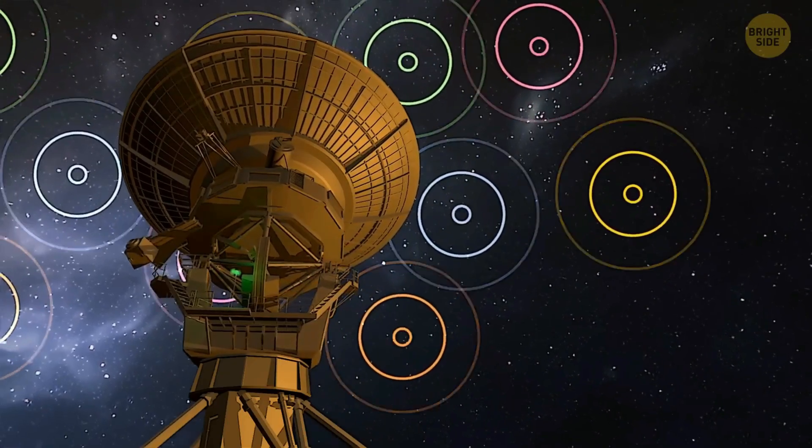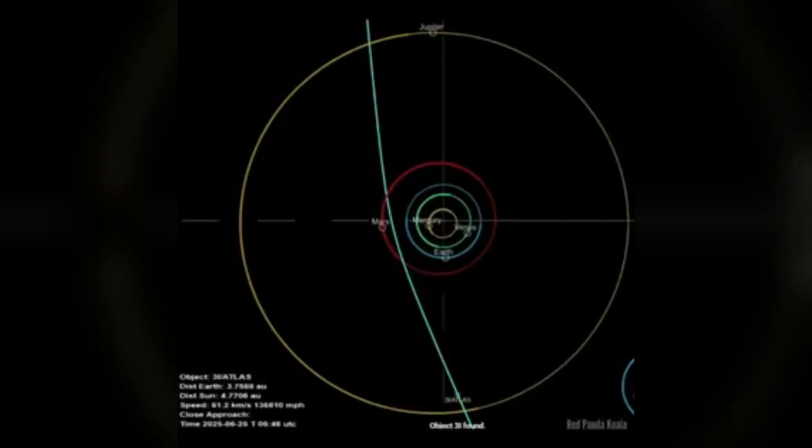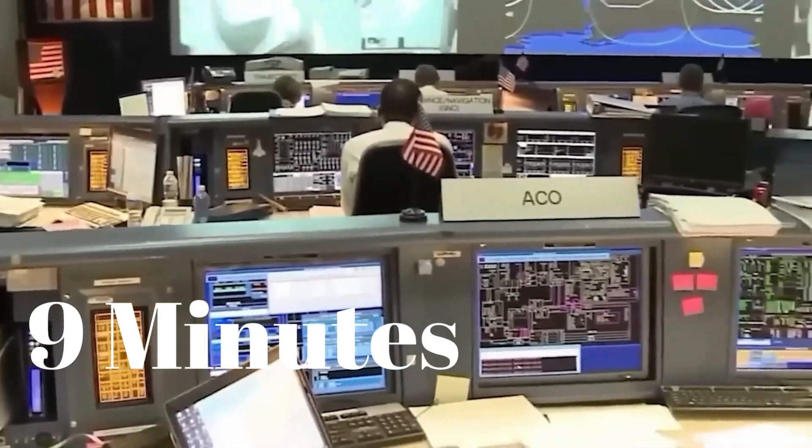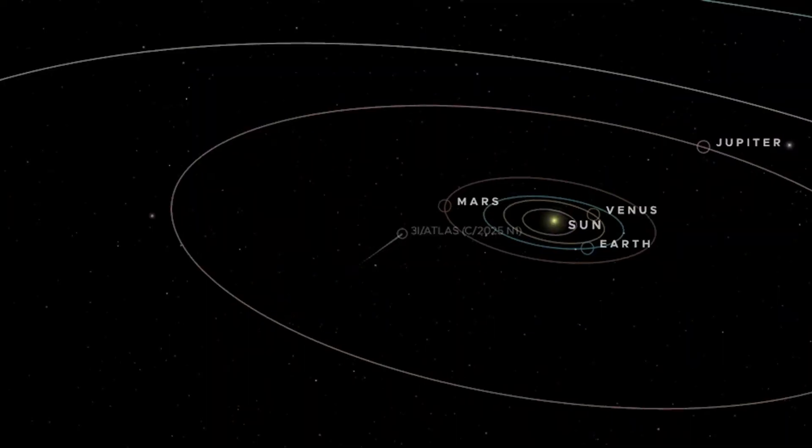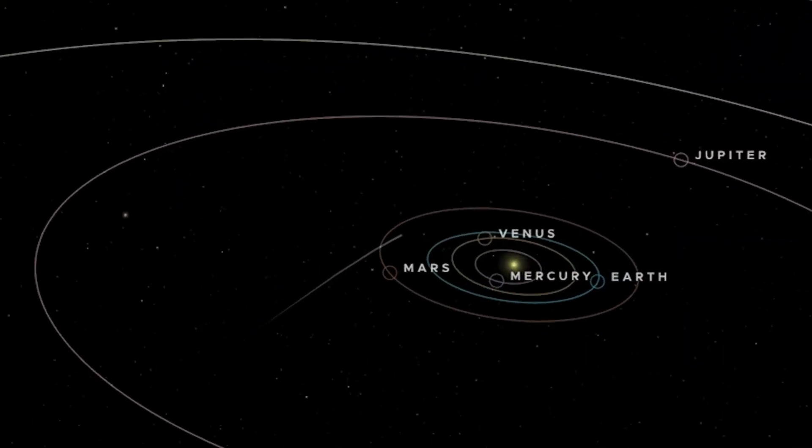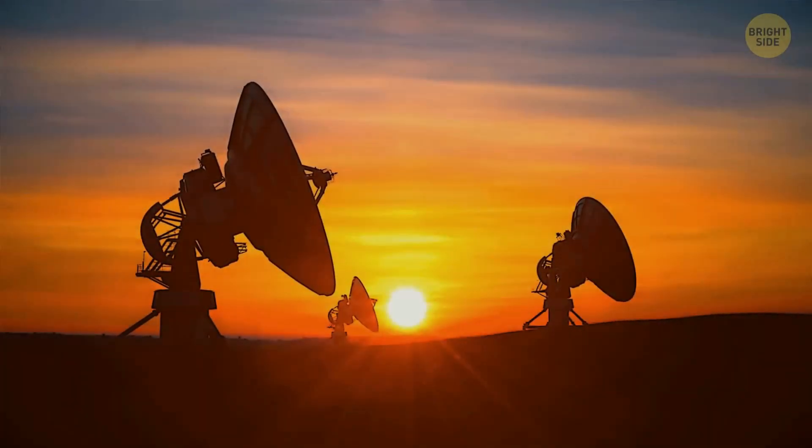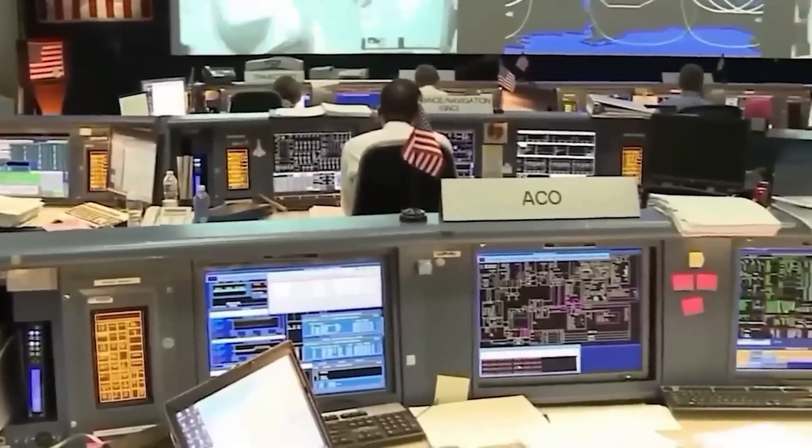Exactly 9 minutes and 22 seconds after their transmission ended, the receivers flared alive. A surge of power flooded the boards, clean, structured, and unimaginably complex. Every sensor locked onto a single coordinate, the trajectory of 3I Atlas. The room froze. A 9 minute reply was impossible. It broke Einstein's speed limit. The cosmic rule that nothing outruns light. It was as absurd as mailing a letter to someone across the planet and getting their handwritten answer back before you'd even left the post office. Yet the instruments didn't lie. No interference, no glitch. The signal was real.